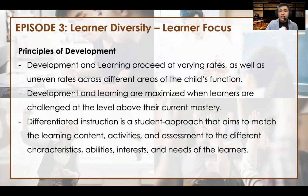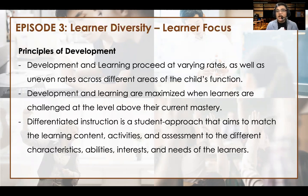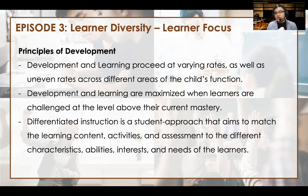So first is the principles of development. Development and learning proceeds at varying rates — as uneven rates across different areas of a child's function. As I mentioned in episode 2, the rate of development of a learner varies. Sometimes a child who is supposed to do something at age 9 can do it at age 12, and sometimes those students do it already at age 7. It happens and it's normal.